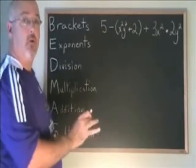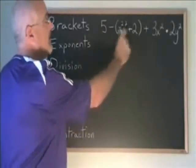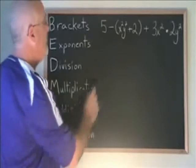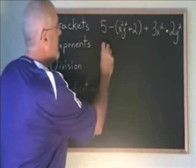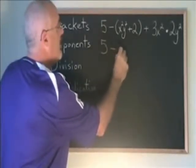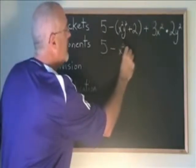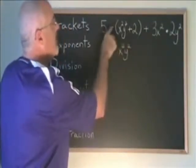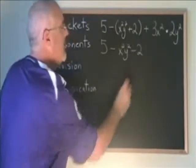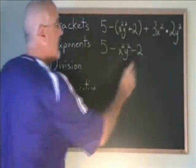What I can do is I can remove the bracket and correct the signs, so I'll do that now. I end up with 5 minus x squared y squared and minus 2. The rest of the question I just copy down.